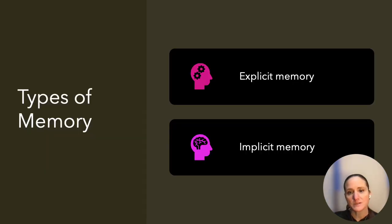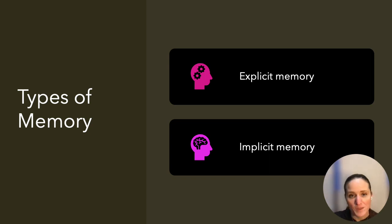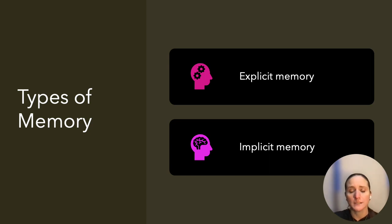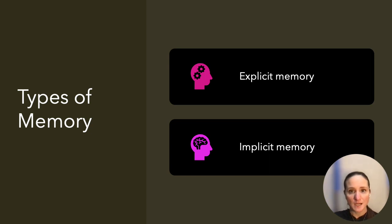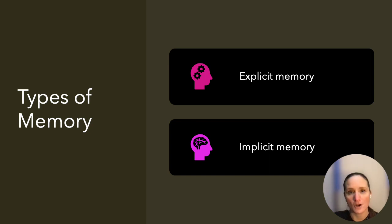The types of memory: explicit and implicit memory. Explicit is the conscious use of memory. It relies heavily on language. Information that is retrieved is typically words that symbolize concepts that are encoded in your memory. Implicit memory is the unconscious use of memory — things done regularly without a purposeful thought, used for everyday tasks.